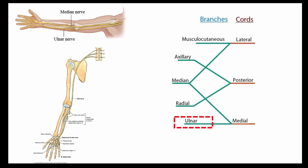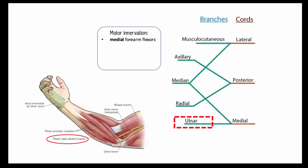At the forearm, it travels alongside the ulnar artery and goes on to enter the hand via the ulnar canal. The ulnar nerve provides motor innervation to the two anterior medial flexors of the forearm, specifically the flexor carpi ulnaris and the medial portion of the flexor digitorum profundus. Remember, the remaining flexors in the forearm are innervated by the median nerve.